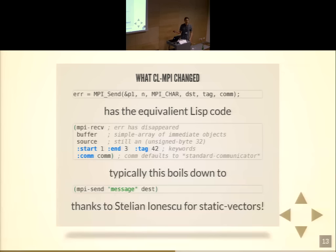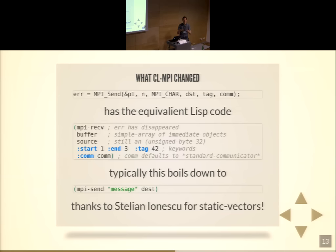A big thanks to Stelian Neonescu — he wrote static-vectors, a package that allows you to say this is both a Lisp vector but should not move in memory, because if the garbage collector moved your array, your MPI code would be broken in some cases. Using static-vectors, we get sane semantics.